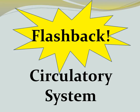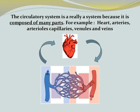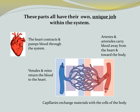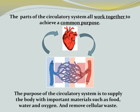Let's flash back to the circulatory system. Consider the three parts of a system definition. The circulatory system is a system because it's composed of many parts: the heart, arteries, arterioles, capillaries, venules, and veins. These parts all have their own unique job. The heart pumps blood throughout the body; arteries and arterioles carry clean blood toward the body; capillaries exchange gases with the body; and venules and veins return dirty blood back to the heart. These parts all work together to provide the body with important materials such as food, water, and oxygen, and to remove cellular waste.